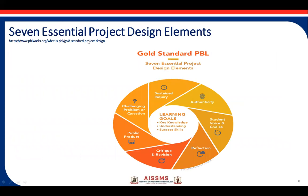There are seven essential project design elements. As we can see in this diagram, the first is authenticity, then student voice and choice, reflection, critique and revision, public product, challenging problems or questions, and sustained inquiry. These are the seven essential project design elements. The learning goal is to develop key knowledge, understanding, and success skills.